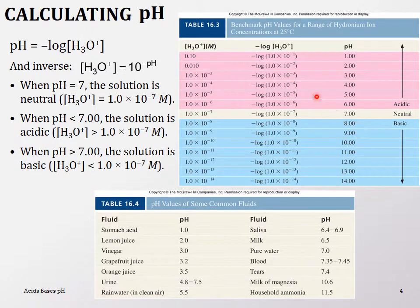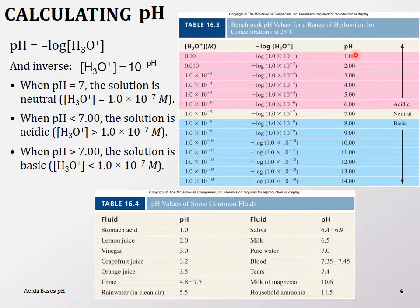In table 16.3, the pink entries are acidic pHs, the blue ones are basic, and in the middle we have neutral. Remember: the smaller the pH, the stronger the acid, because you have more hydronium ion concentration.